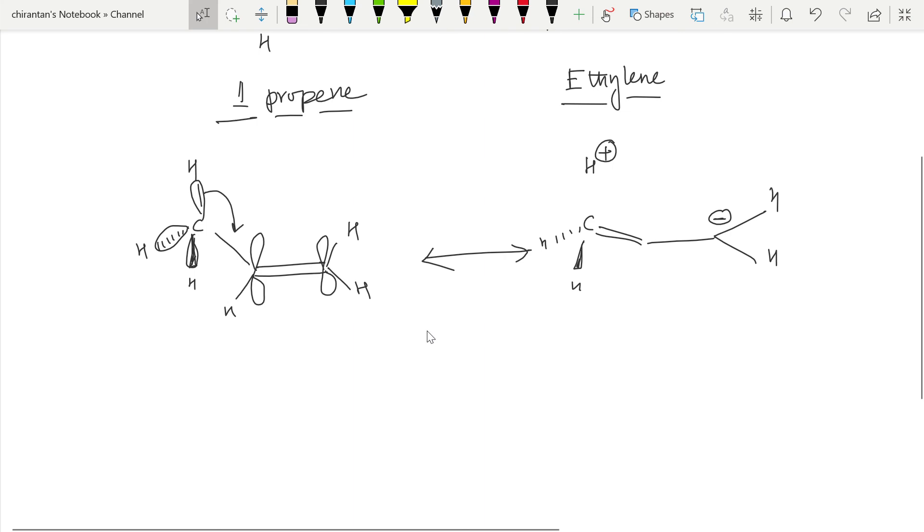If this single bond rotates, the hydrogen which is now below the plane will go up and can again form conjugation with the double bond. That means for three hydrogens there could be three possible conjugations or hyperconjugations - three different resonance structures - which makes propene much more stable than ethylene.